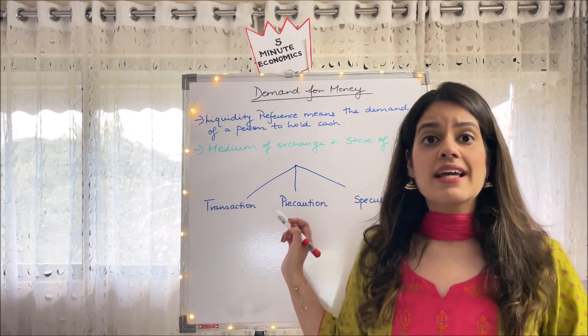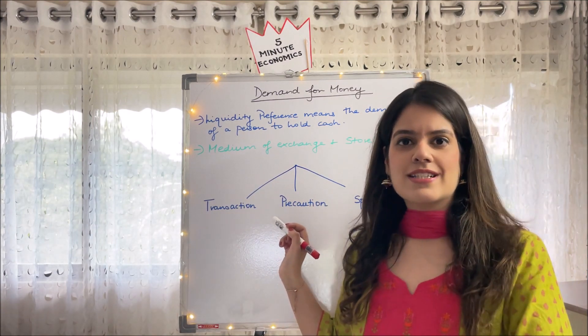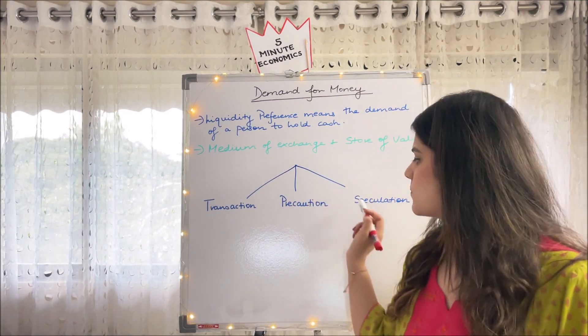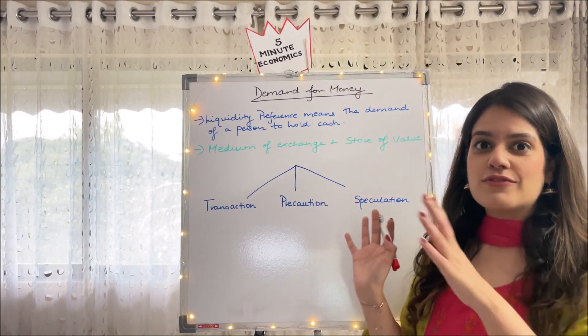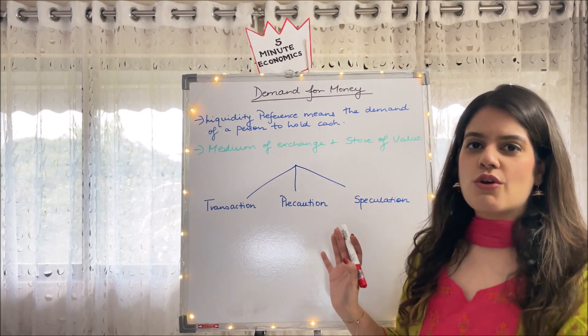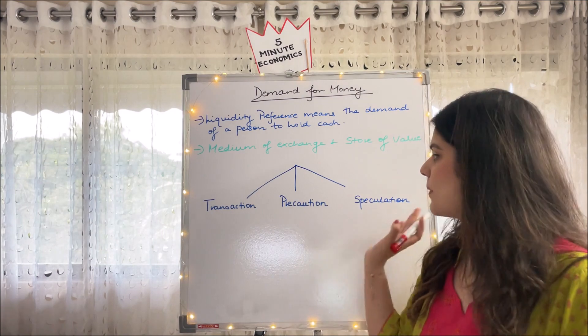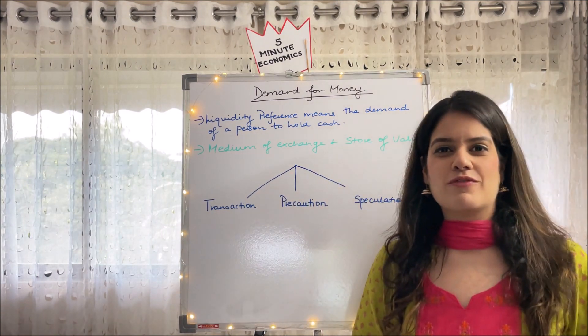The first two were covered by the classical approach as well. But the third motive, which is speculation, was kind of left out by them and the Keynesian school of thought then came in and spoke about all the three motives to demand for money.